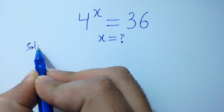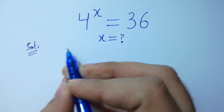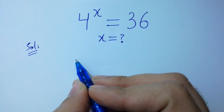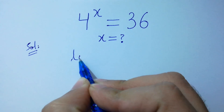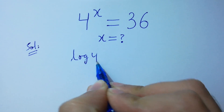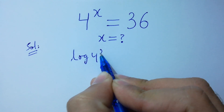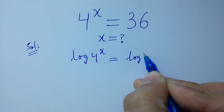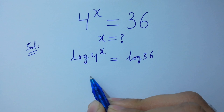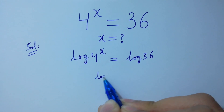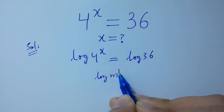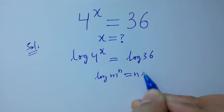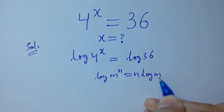To solve this, take log on both sides. Log 4 to the power x equals log 36. As log m to the power n equals n log m, so we apply that property.